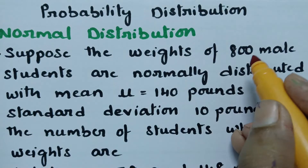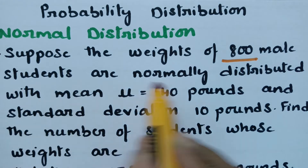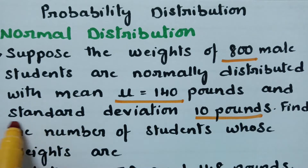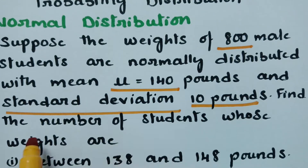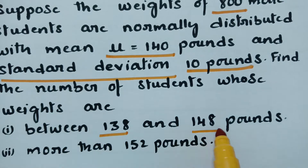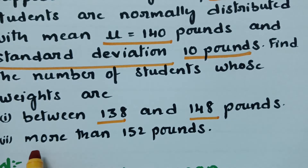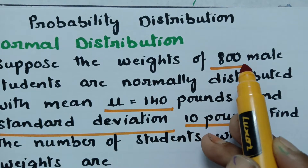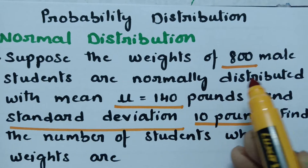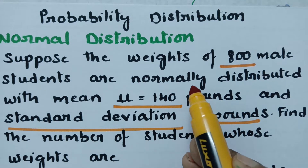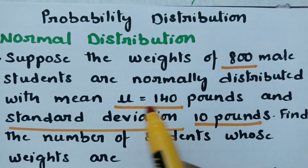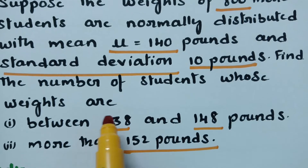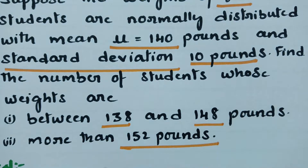Suppose the weights of 800 male students are normally distributed with mean 140 pounds and standard deviation 10 pounds. Find the number of students whose weights are between 138 and 148 pounds, and the second question: more than 152 pounds.